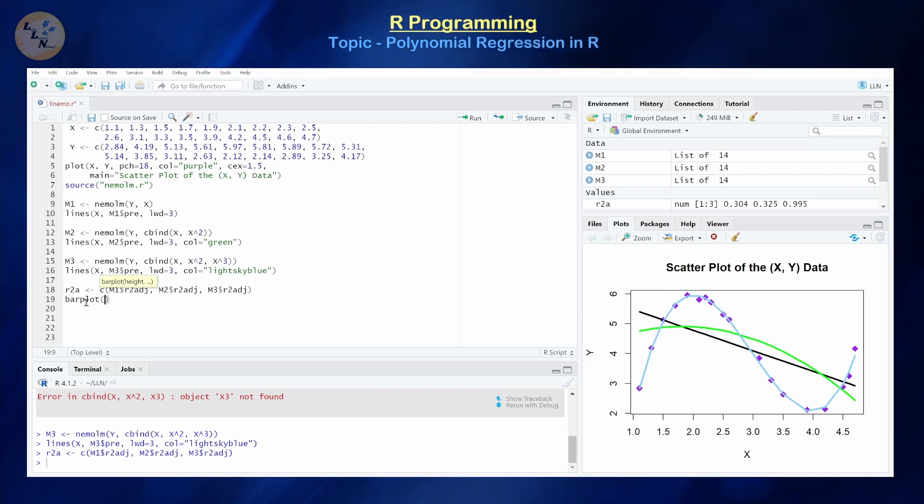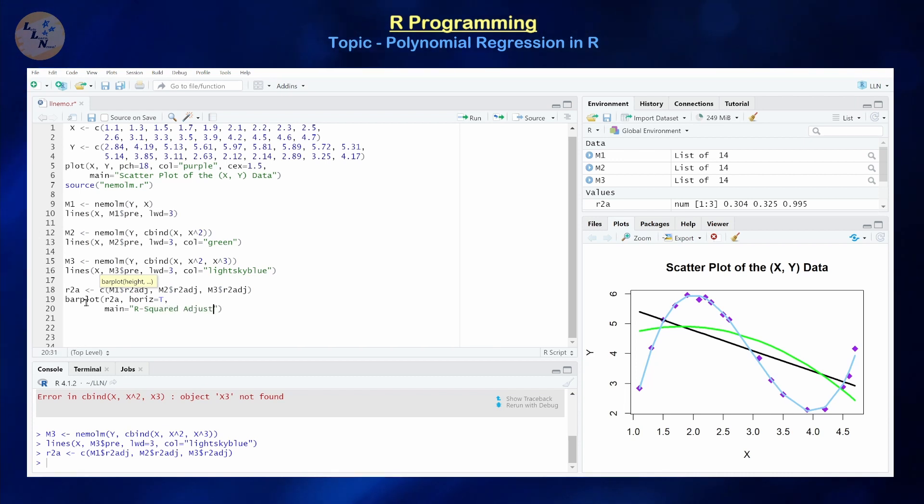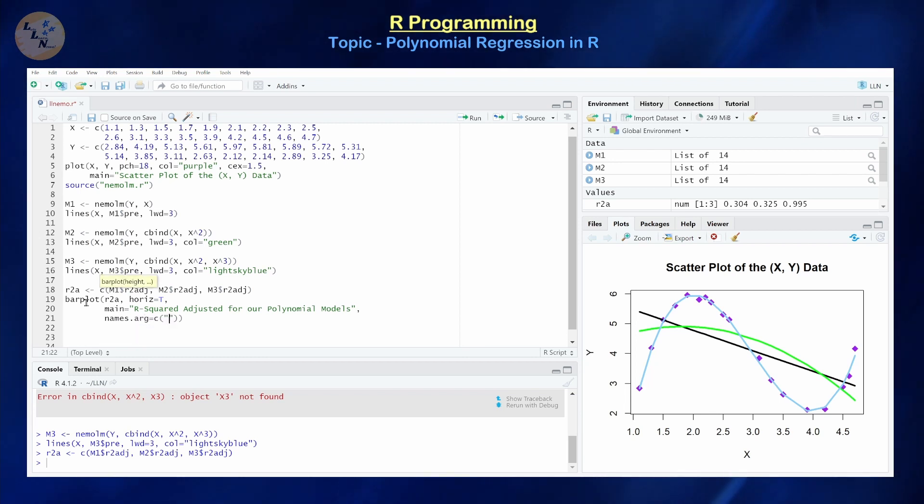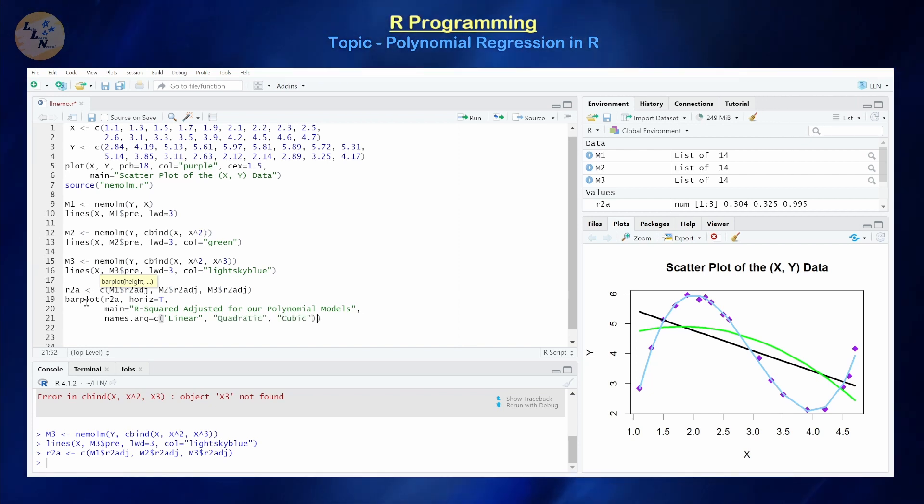So let's make a bar plot, and our bar plot is going to consist of our R squared adjusted values that we just calculated. Let's make this horizontal just for fun. So horizontal equals true, and let's give this a nice little title. So main, this is going to be R squared adjusted values for our polynomial models. Okay, let's label each of the plots, so names.arg, and that's going to be equal to, so the first one's going to be our linear R squared adjusted value, then it's going to be our quadratic R squared adjusted value, and then it's going to be our cubic R squared adjusted value, and let's give it some color, let's color this beige.